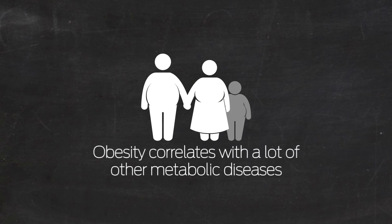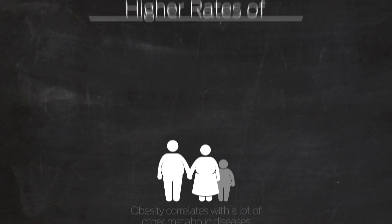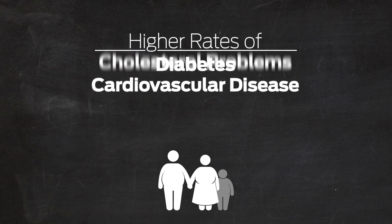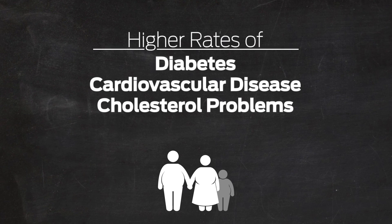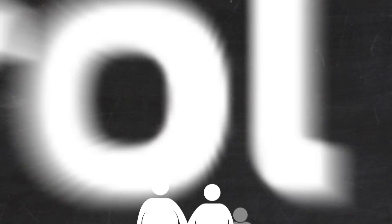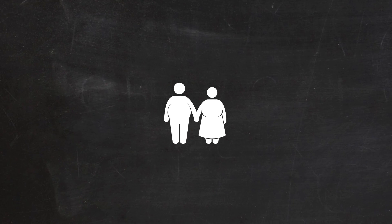Obesity correlates with a lot of other metabolic diseases such as higher rates of diabetes, higher rates of cardiovascular disease, higher rates of cholesterol problems, and higher rates of blood pressure problems. We also found variants that not only affected body mass index but also affected these other traits. As people become obese, some people stay healthy while some people develop these metabolic diseases, and we don't really know why that is.